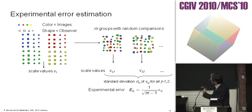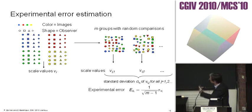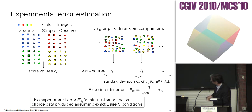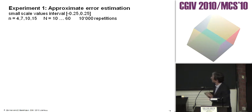One can do this experiment several times, then average and get a good experimental error estimate. We use this error estimation and make simulations based on choice data produced assuming exact case 5 conditions. We make three experiments. The first experiment is to test the approximate error estimation. We have small scale values, smaller than one quarter, use different numbers of stimuli and a whole range of observations, making 10,000 repetitions.